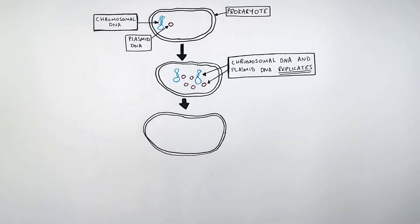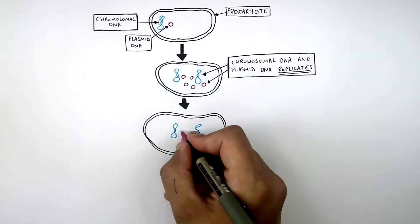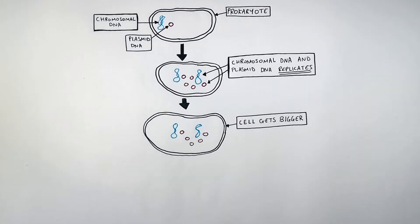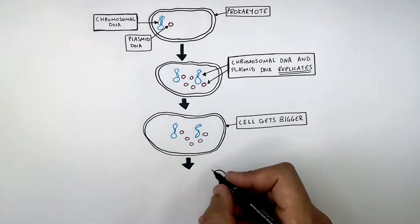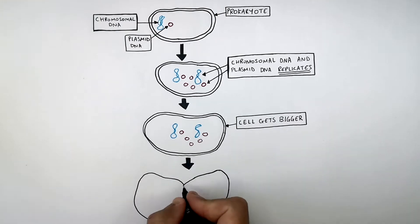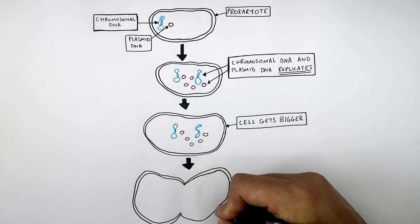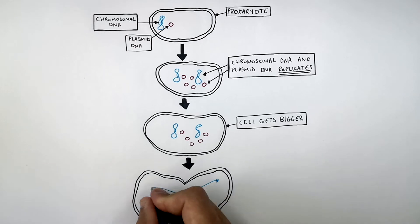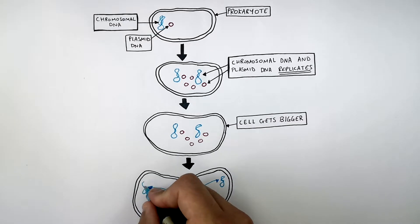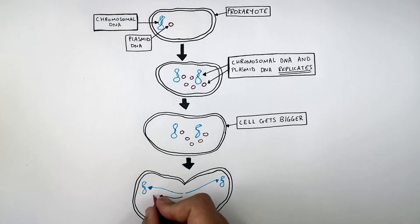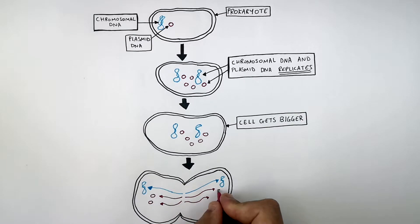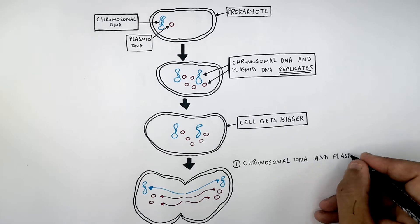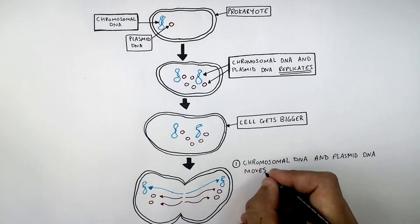The prokaryotic cell then gets bigger, as you can see here. And before the cell divides, the chromosomal DNA and the plasmid DNA move to the poles of the cell. As you can see here, the chromosomal DNA and the plasmid DNA are both moving to the poles of the cell.